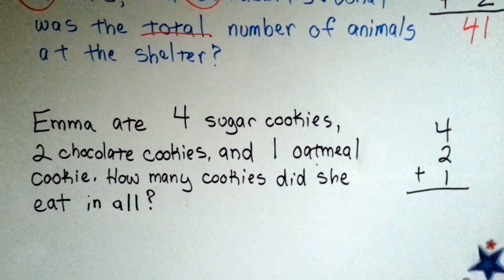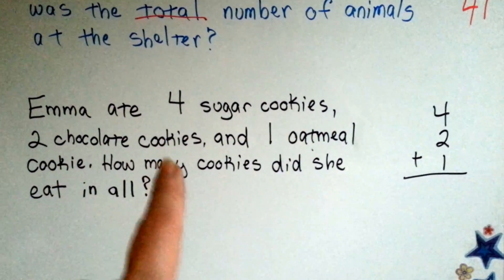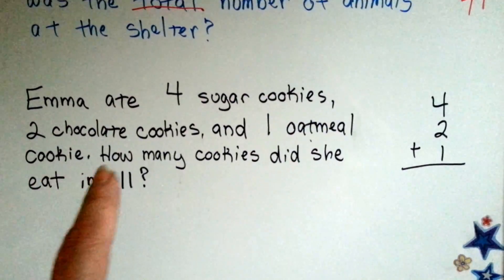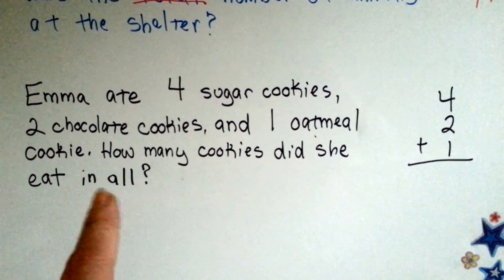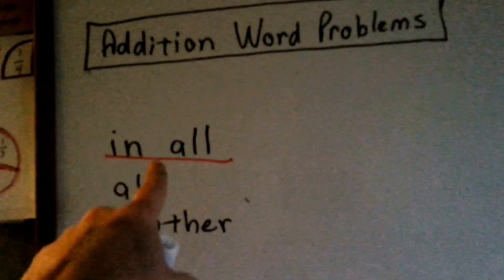What about this one? Emma ate four sugar cookies, two chocolate cookies, and one oatmeal cookie. How many cookies did she eat in ALL? Well, in ALL is a word problem addition.